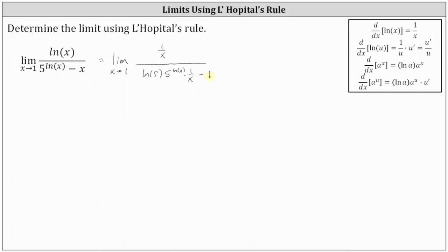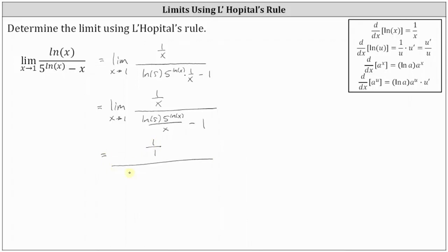Let's simplify this a little bit. We have the limit as x approaches one of one divided by x, all divided by natural log five times five to the power of natural log x, all divided by x, and then minus one. We can now find this limit by performing direct substitution. We have one divided by one, all divided by natural log five times five to the power of natural log one, all divided by one, minus one.